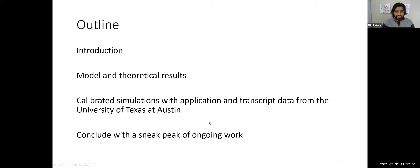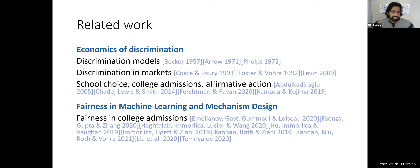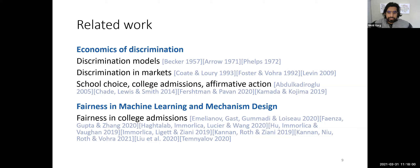At time permitting, I'll conclude with a sneak peek of ongoing work on the same testing regime but a slightly different model. At a high level, the work relates to the economics of discrimination literature — statistical discrimination from Becker and Phelps from the 50s, 60s, and 70s — combined with the more recent fairness in machine learning and mechanism design literature. What we merge from both is the effect of data and features and their foundational properties on the downstream decision task.